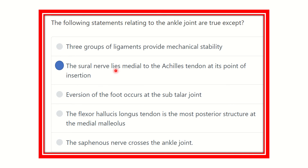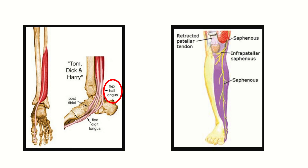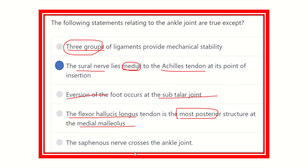So our final answer is ready. The sural nerve lies medial to the Achilles tendon — this is not true, because the sural nerve lies lateral to the Achilles tendon on the lateral side. Three groups of ligament provide mechanical stability — this is true. Eversion of the foot occurs at the subtalar joint — we saw that in the picture, true. The flexor hallucis longus tendon lies most posterior behind the medial malleolus — true. The saphenous nerve crosses the ankle joint — also true.